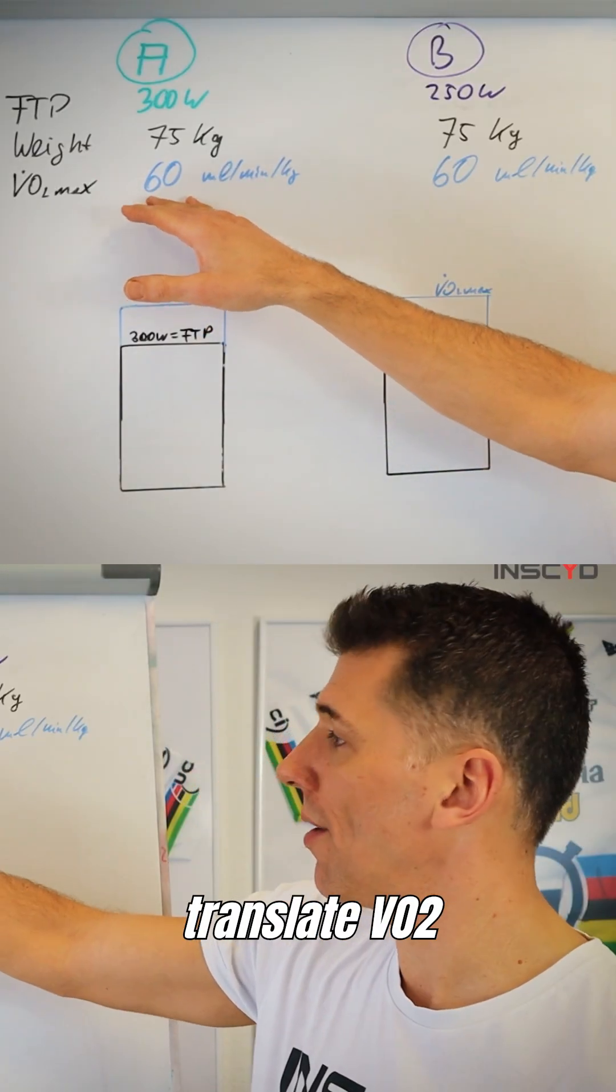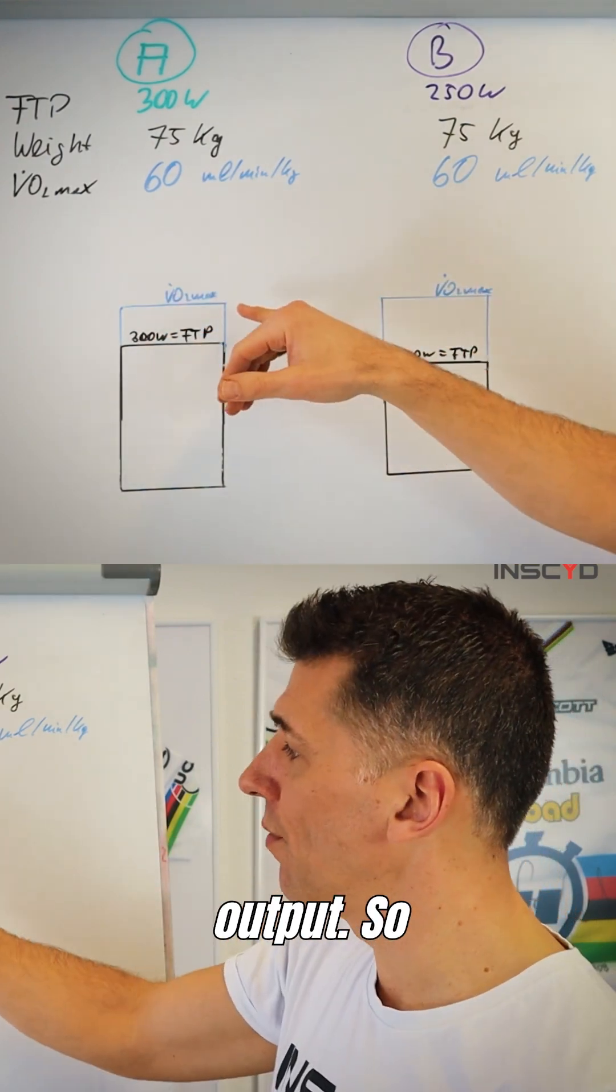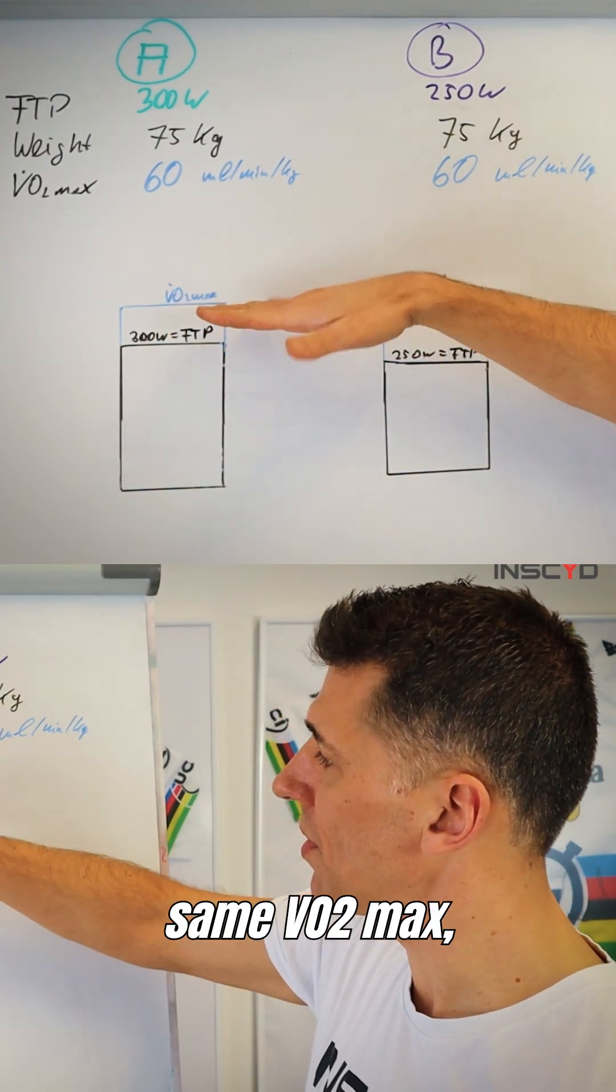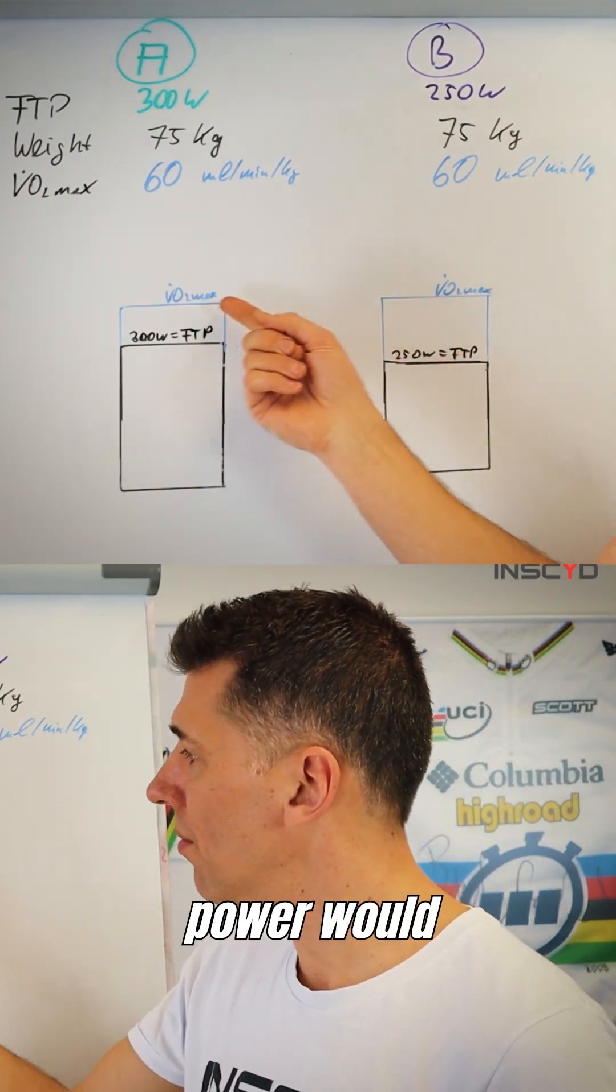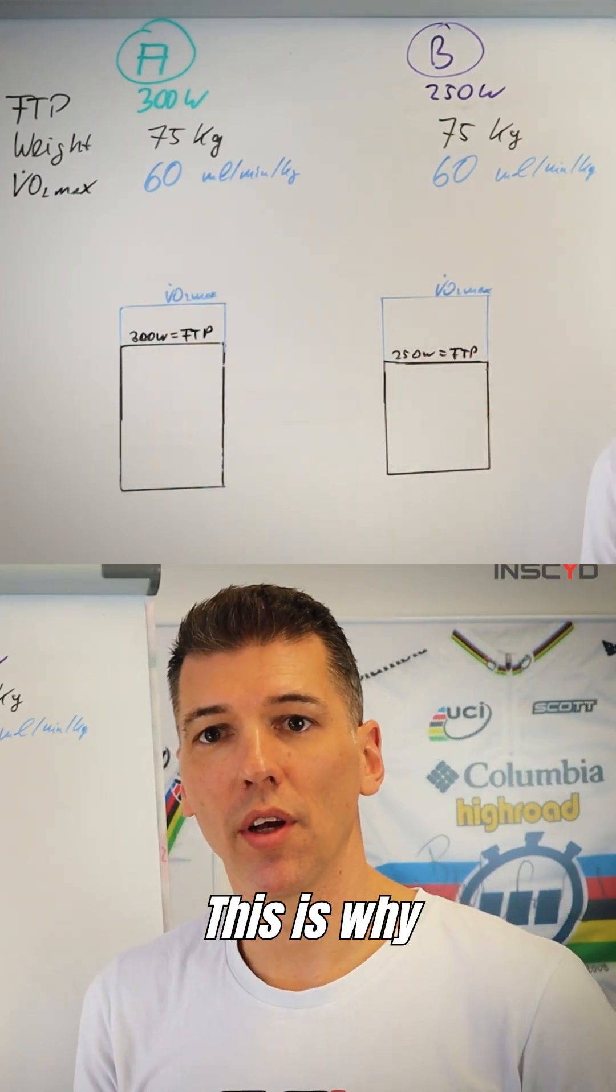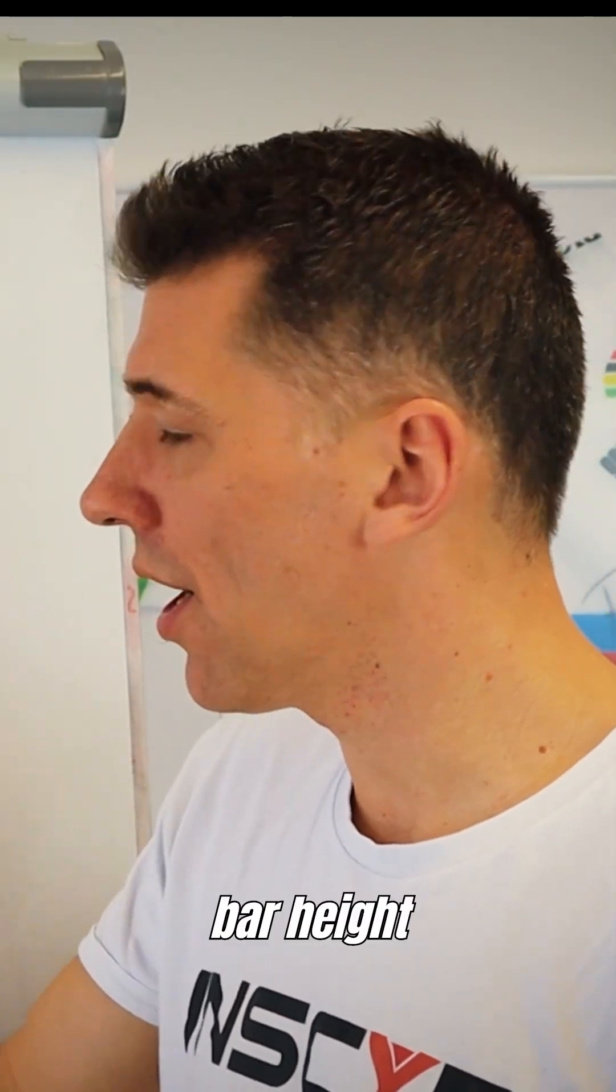But because they have the same VO2max, you can translate VO2max by body weight and gross efficiency into power output. So because they do have the same VO2max, their VO2max equivalent power would approximately be the same. This is why you see they have the same bar height here.